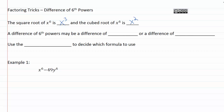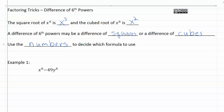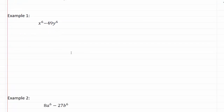A difference of sixth powers may be factored as a difference of squares or a difference of cubes. In order to figure out how we have to factor it, we're going to have to use the numbers to decide which formula to use. Let's look at example one and see how the numbers help us decide between difference of squares and difference of cubes.